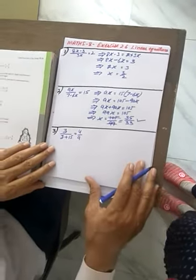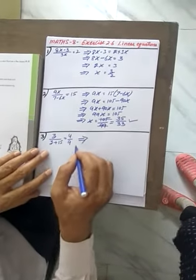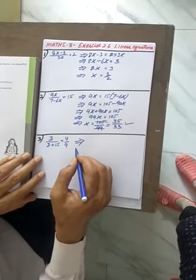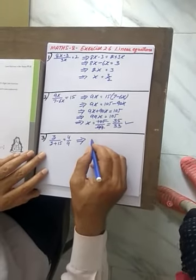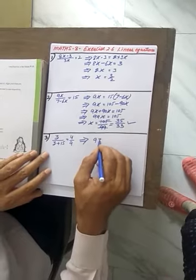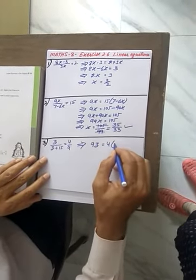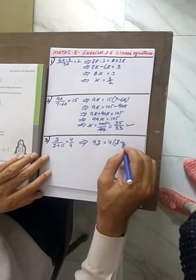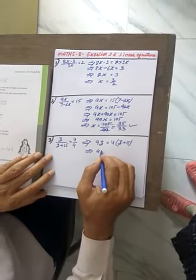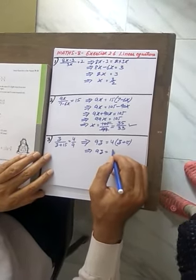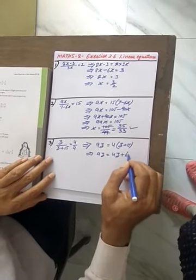Now let's solve this. See, we have to cross multiply. So 9 gets multiplied with z makes it 9z is equal to 4 multiplied by z plus 15. This gives you 9z is equal to 4z plus 60.